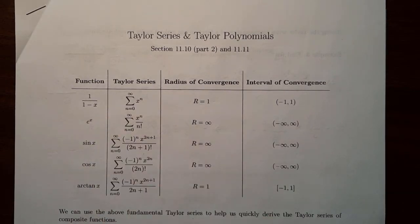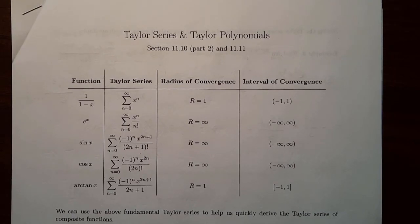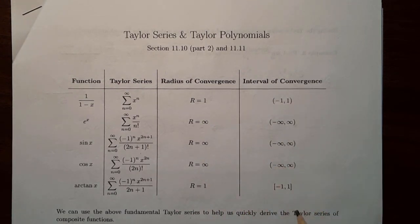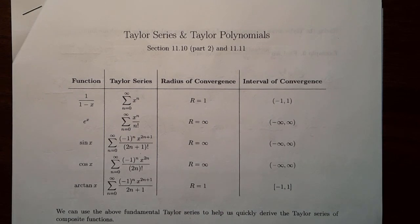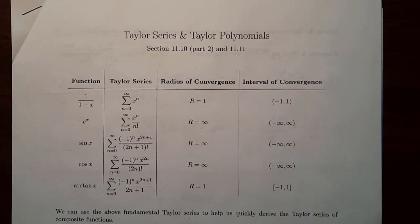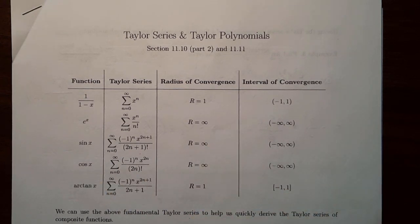Here are our five functions: 1 over 1 minus x, e to the x, sine and cosine, and arctan. Something I did not mention last time — also be sure you remember what the radius and intervals of convergence are, because those are also important to know. Three of them have radius of convergence infinity, which means the interval of convergence is all the real numbers, and the other two are just minus 1 to 1 — one open, one closed. I'll leave it on screen so you can pause and re-familiarize yourselves.